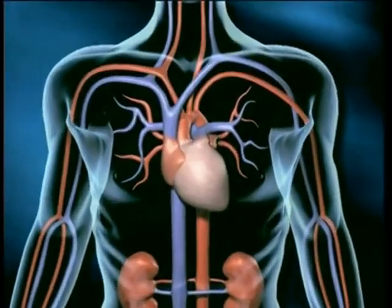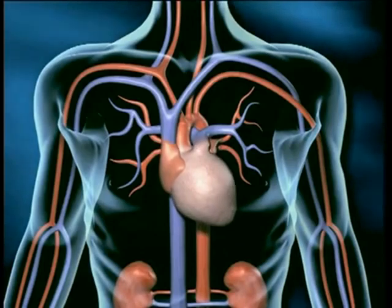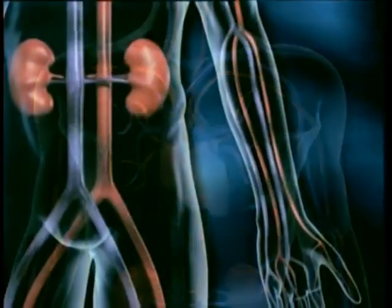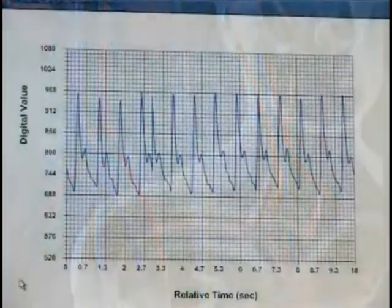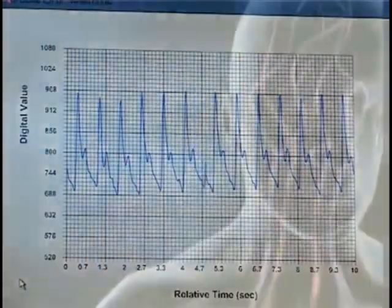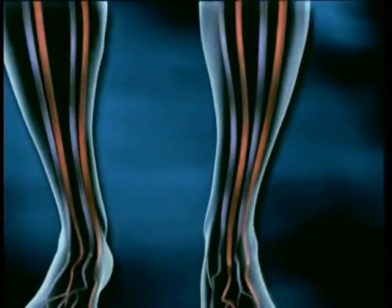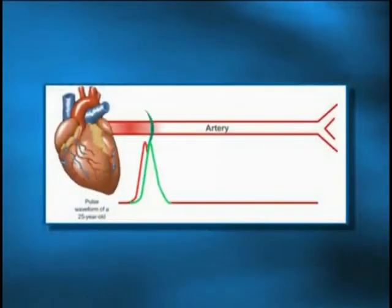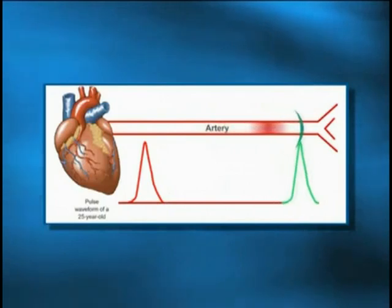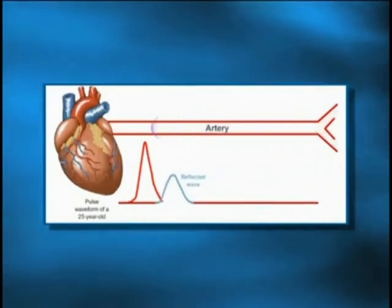We have to understand how the body generates a pulse wave. Generally what happens is the heart pumps and pushes out blood. When the heart pumps, it generates a pulse wave, which is a contour wave that travels along the arterial tree. The waveform is actually generated here and it goes right down to the big aorta.